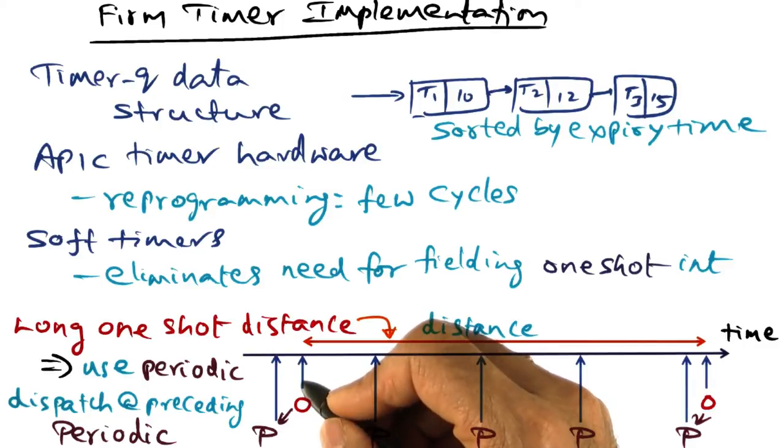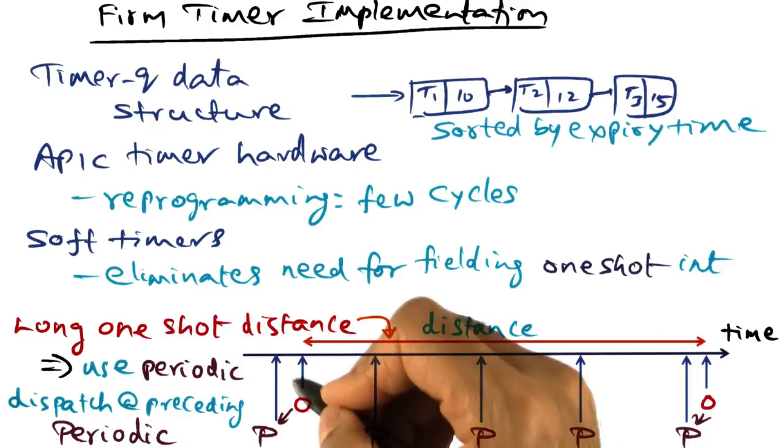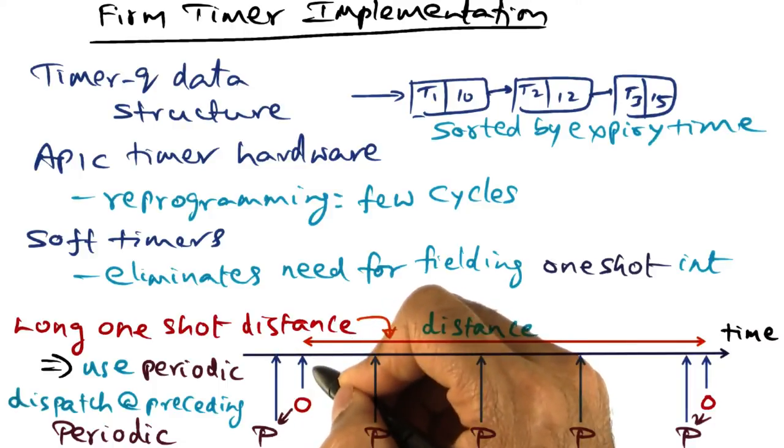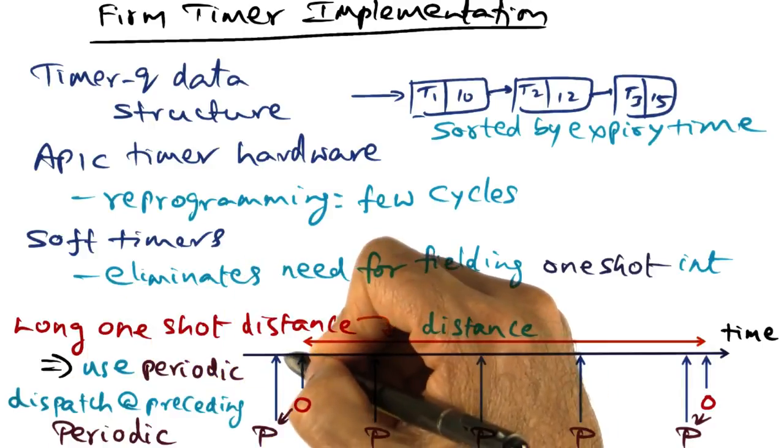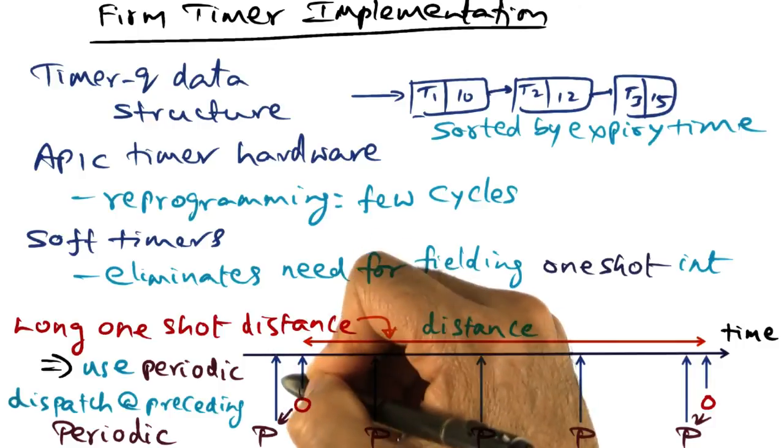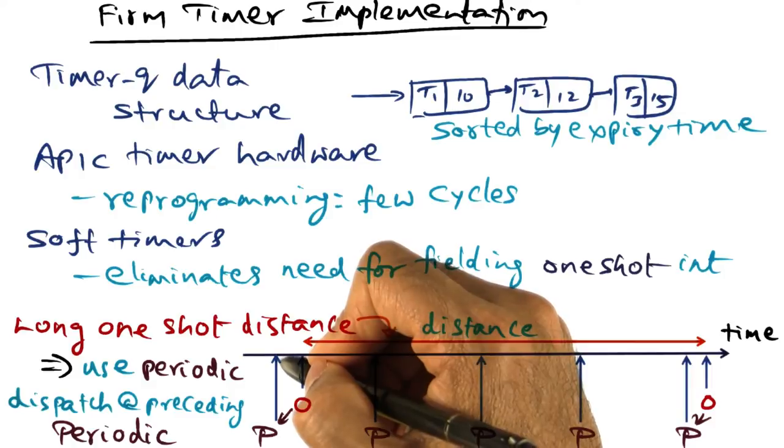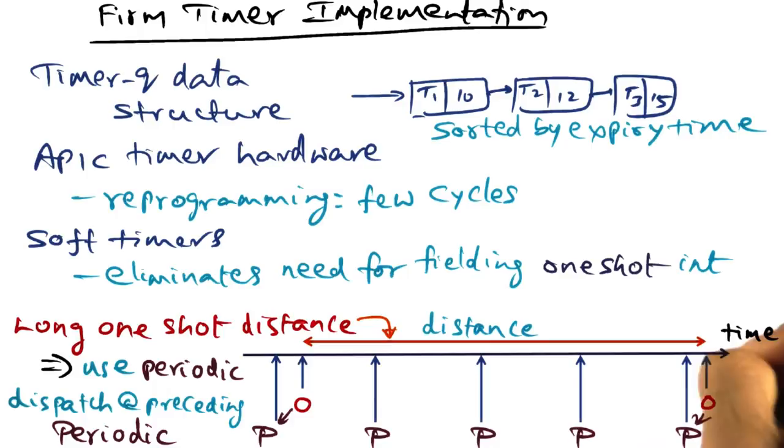Just as in the case of the overshoot parameter being used in combining one-shot with soft timers, what we are doing here is because periodic timers are going to interrupt anyhow, and if the kernel notices that there is a one-shot event coming up fairly soon, then it can simply dispatch that one-shot event at the preceding periodic timer event. And once you do that, you can reprogram this one-shot event to go off at the next expiry point.